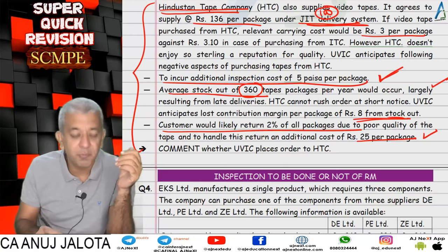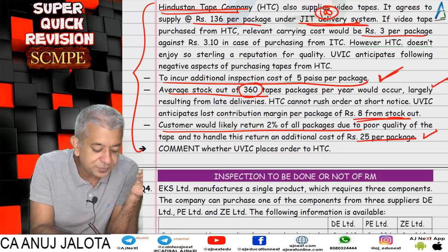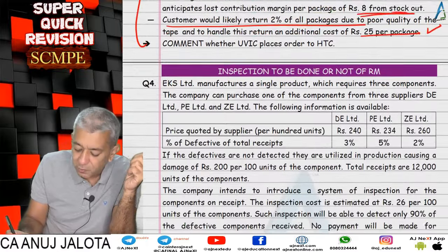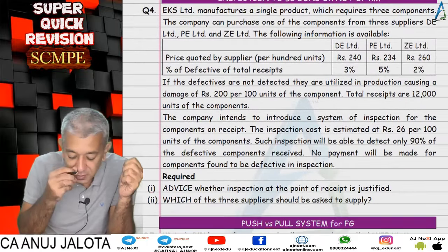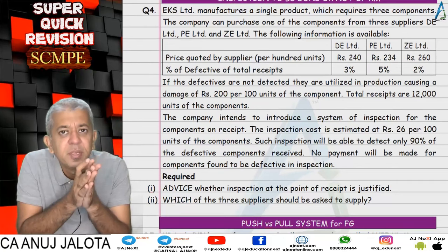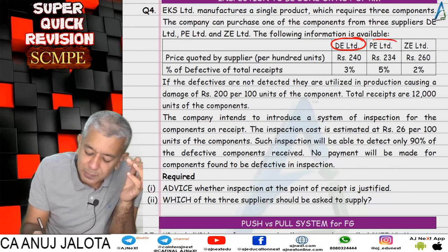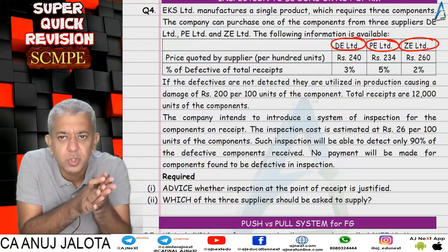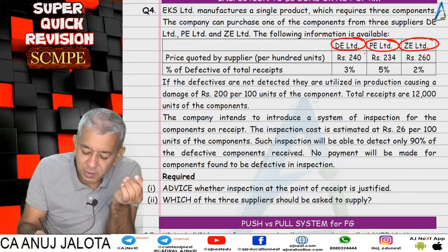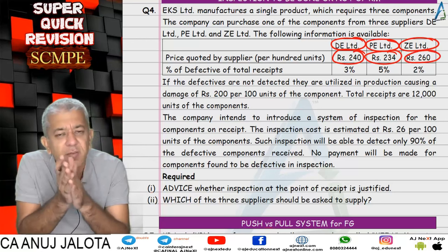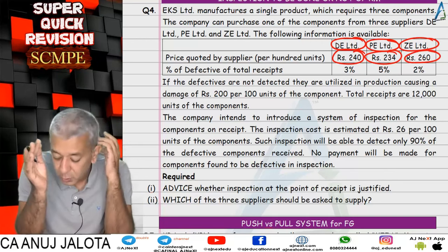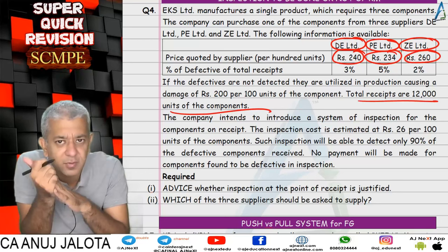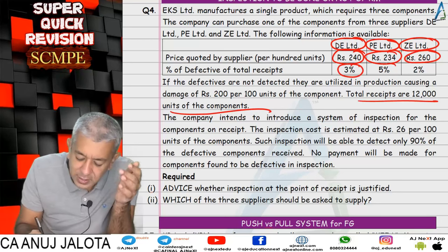That was question number four. In this case we have an option to purchase a particular component from three suppliers — D, E, and P. We try to find whichever is cheaper. First we compute the purchase cost per unit: converting from per 100 units gives 2.40, 2.34, and 2.60. Multiplied by 12,000 units, that gives the purchase cost for each supplier.